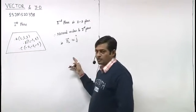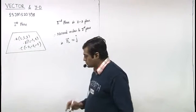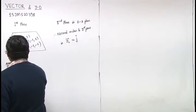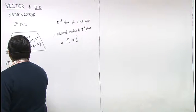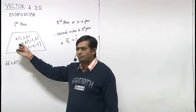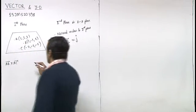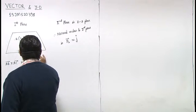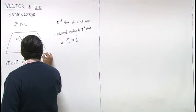For the first plane's normal vector, first find AB cross AC. AB cross AC direction is perpendicular to the plane. So first we have AB cross AC. This is i cap, j cap, k cap.